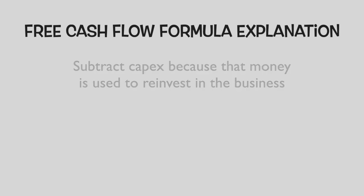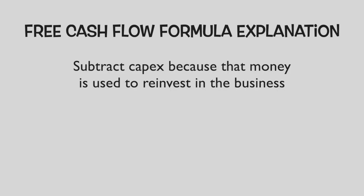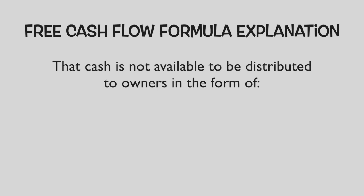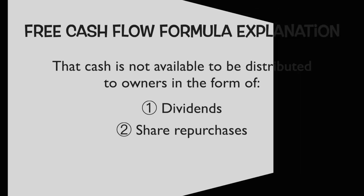The reason you subtract out capital expenditures is because that money is essentially cash that needs to be reinvested in the business to either maintain the business's current size or to grow. Therefore, that cash is theoretically not available to be distributed to owners in the form of dividends or share repurchases. Now that we understand the simple math behind calculating cash flow, let's use an example of a pizza shop to walk through how you would use a discounted cash flow valuation to determine the intrinsic value of a business.